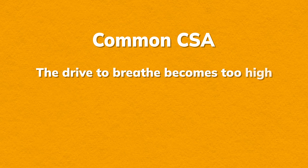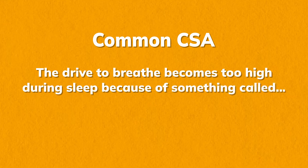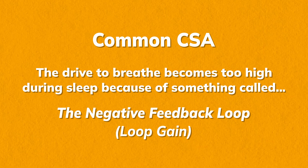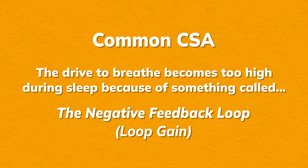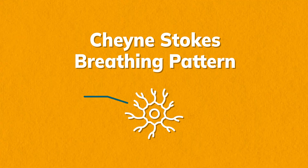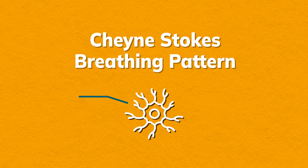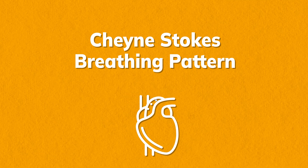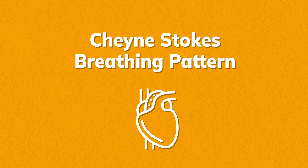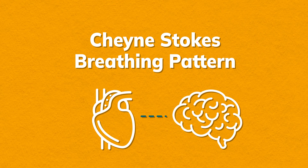But the more common kind of CSA occurs when the drive to breathe becomes too high during sleep because of something called the negative feedback loop, or loop gain, in the breathing signal. This increased drive can cause something called a Cheyne-Stokes breathing pattern. This is caused by nerve cells known as chemoreceptors that are located by the heart, whose function is to sense changes in the chemical composition of the blood and send that information to your brain.